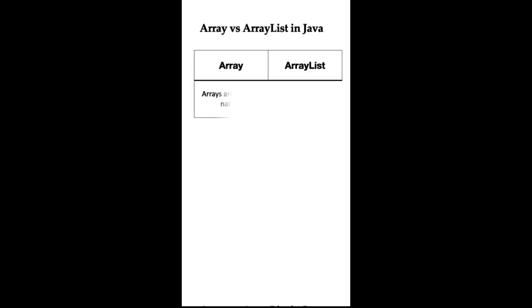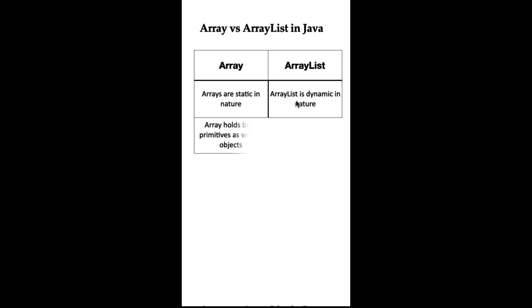What is the difference between array and ArrayList in Java? Arrays are static in nature, meaning their size is fixed upon creation and cannot be changed. ArrayList is dynamic in nature — it allows resizing itself automatically when elements are added or removed. Arrays can hold both primitive data types and objects as well, whereas ArrayList